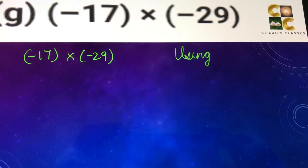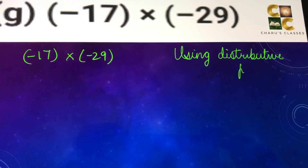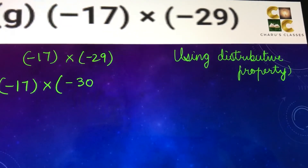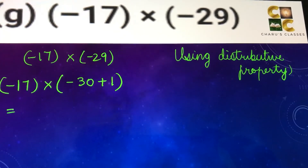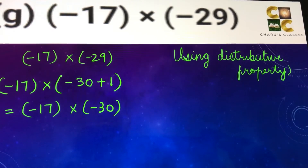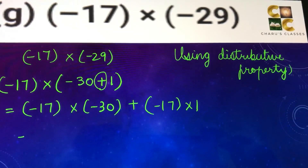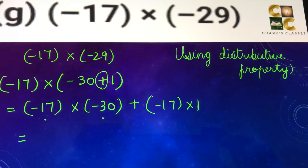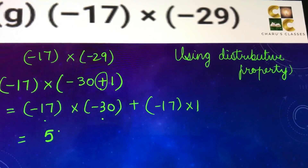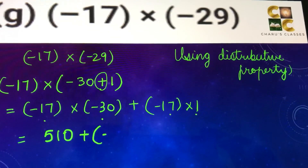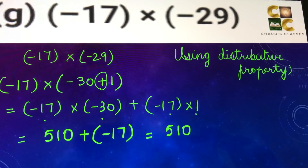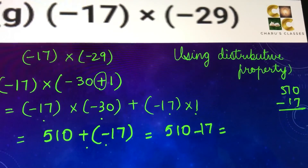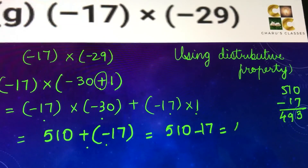Part g: minus 17 into minus 29. Here also we are going to use distributive property. Minus 29 can be written as minus 30 plus 1. So I will multiply minus 17 into minus 30, then plus minus 17 into 1. Minus 17 and minus 30 — two negative numbers when multiplied give a positive answer — 17 times 3 is 51, with another zero, so this is 510. And minus 17 into 1 is minus 17. So 510 minus 17 gives 493.